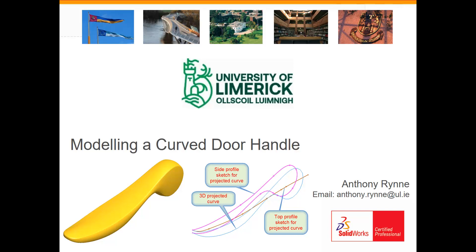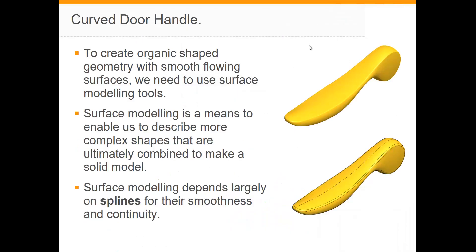In this video we look at modeling the curved door handle. There are no straight edges anywhere on it, and when you have to create these smooth flowing surfaces you need to use surface modeling. When we use surface modeling, to get smooth surfaces we have to use splines to create these surfaces. Organic smooth shapes require the use of surfaces — it's not possible to do directly with solids — but we end up with solids at the end, using splines which give us smooth continuous surfaces and curves.